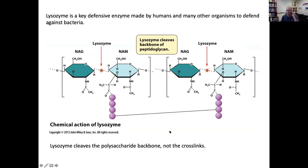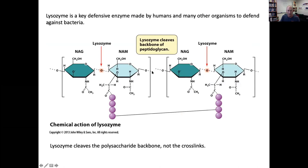Lysozyme is an enzyme many of you have heard of before. It is made by our own bodies and is especially common in mucous membranes and tear ducts. It's also easily purified from egg whites — chickens include lots of lysozyme in egg whites to kill any bacteria that might get in. Lysozyme is a defensive enzyme whose job is to break the polysaccharide backbone of the peptidoglycan by cleaving between the NAM and the NAG.